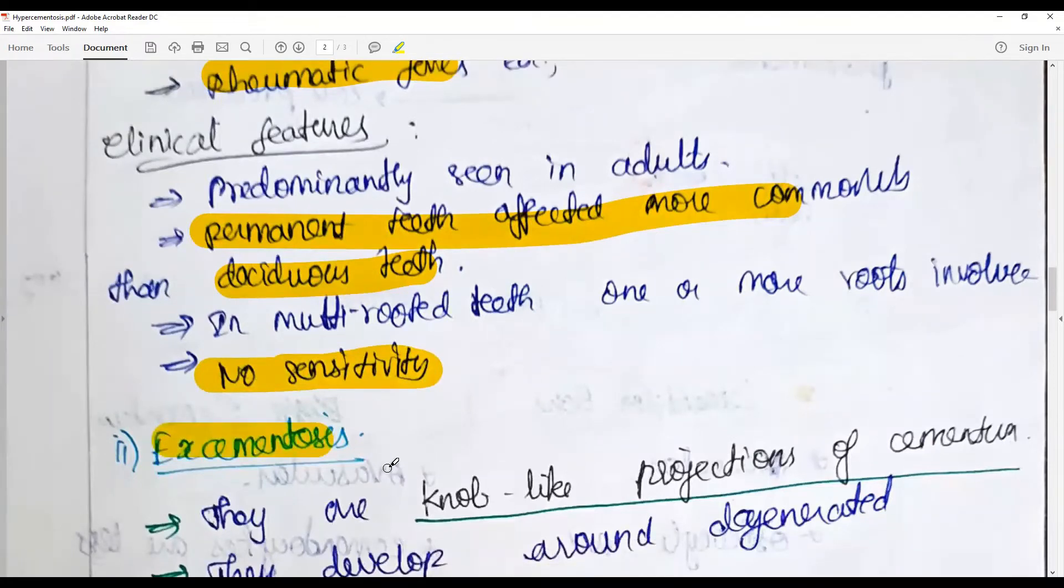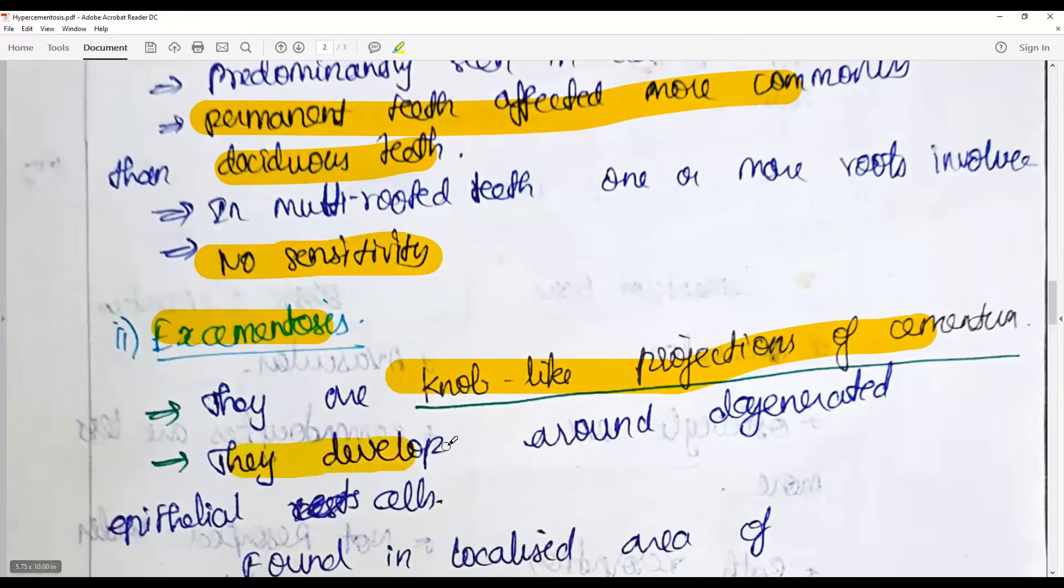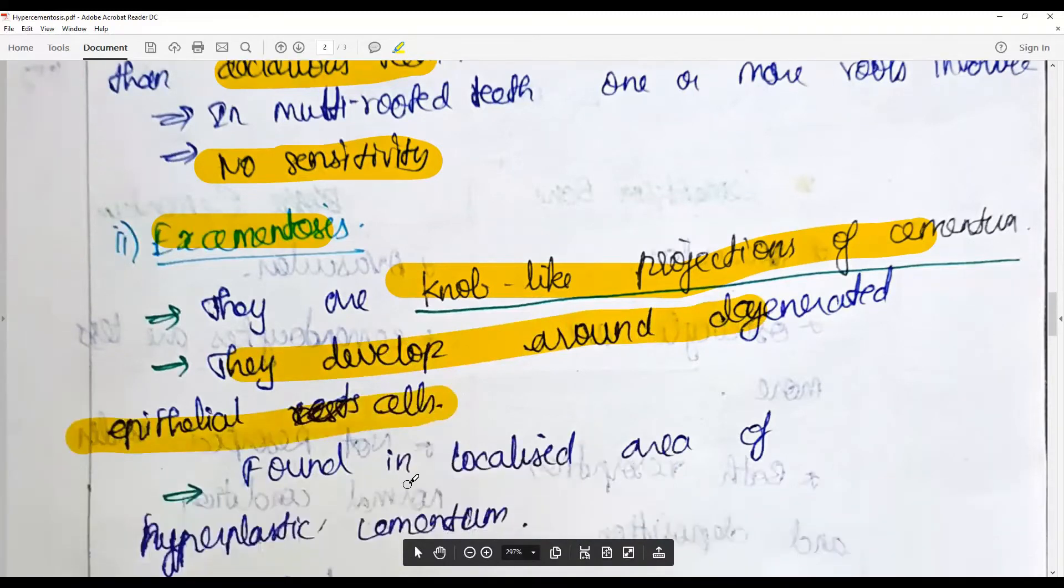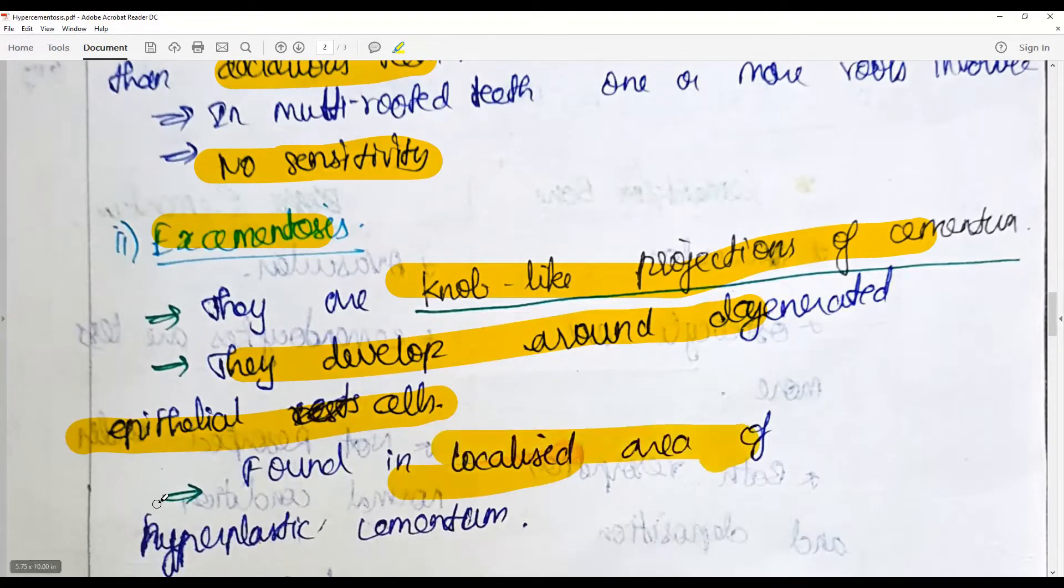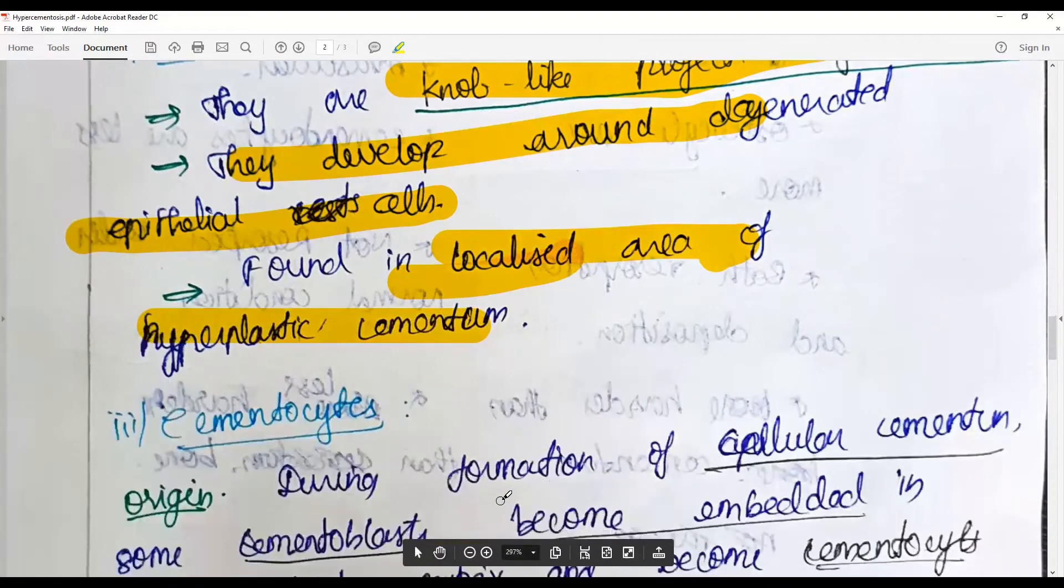Excementosis is a knob-like projection of cementum mistaken for hypercementosis. They usually develop around degenerated epithelial cells, are found in localized areas, and are often misinterpreted or clinically simulate hyperplastic cementum.